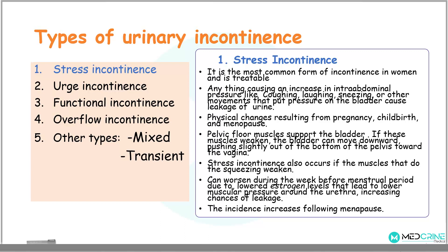Stress incontinence is the most common form of urinary incontinence and occurs most commonly in females. It is treatable. It occurs when anything causes an increase in intra-abdominal pressure — for example, coughing, laughing, sneezing, or any movements that put a lot of pressure on the bladder — causing an involuntary leakage of urine. Stress incontinence can also be associated with physical changes resulting from pregnancy, delivery, or menopause.